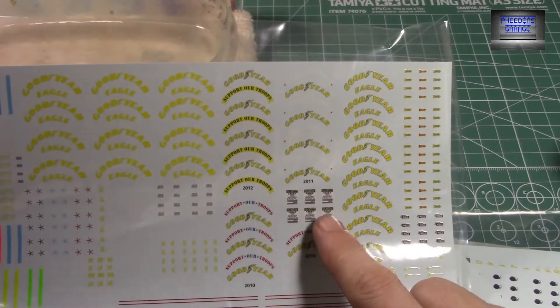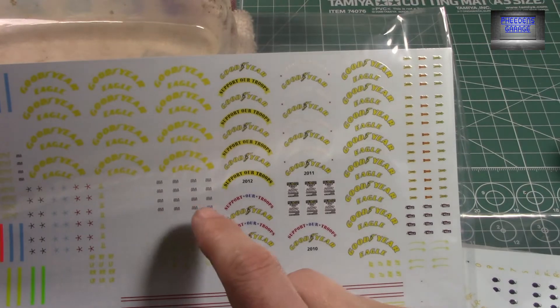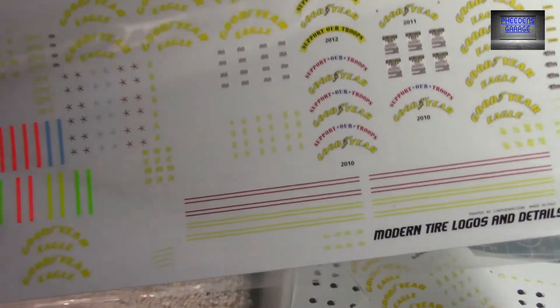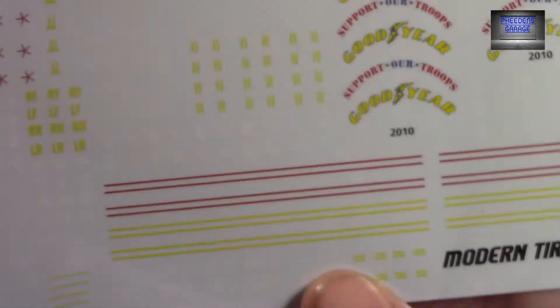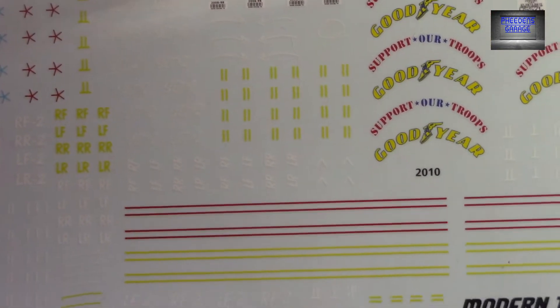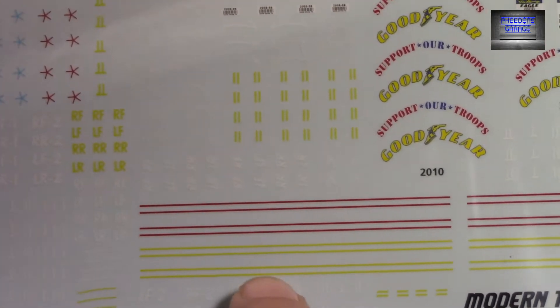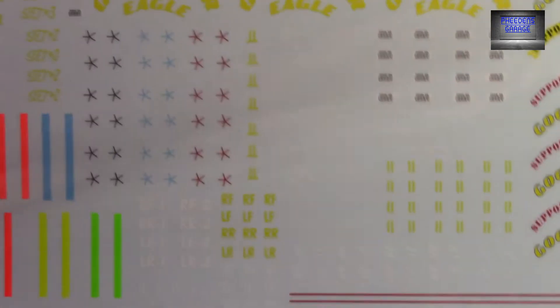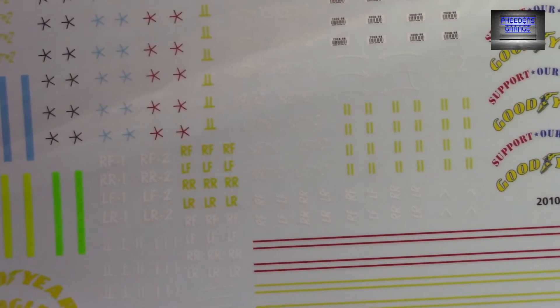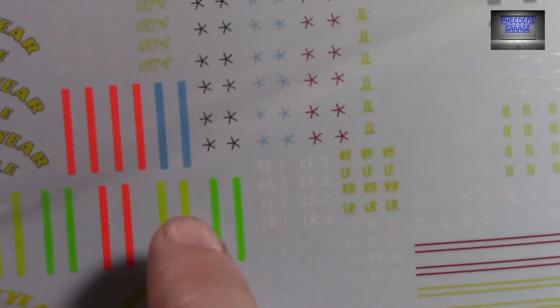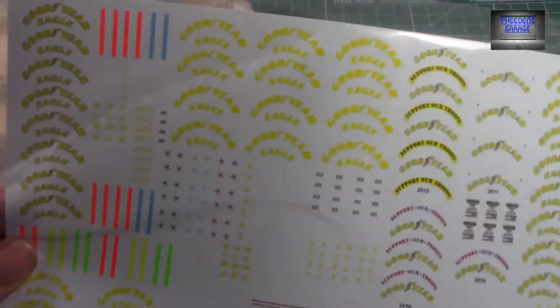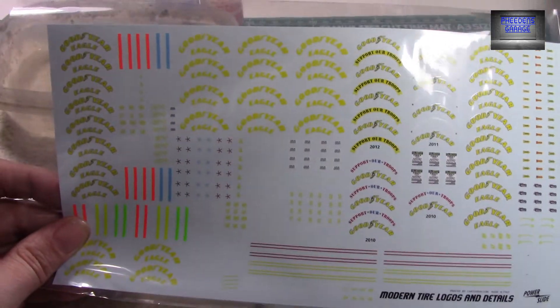You have your sticker decals, barcode decals. These go inside the wheels. You have a whole slew of other decals. These go around the outer part of the inner part of the wheel. Some teams run a yellow strip, some teams run a red strip. You have your markings to designate which side of the car goes on. Your alignment stripes, it's a very nice sheet. If you haven't seen this sheet, this is a really nice sheet. It's about 13 bucks, well worth the money.